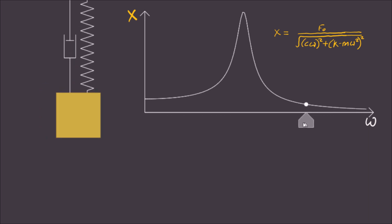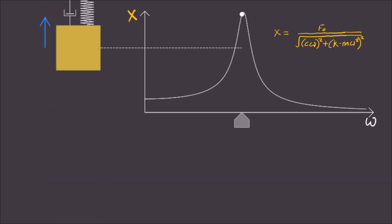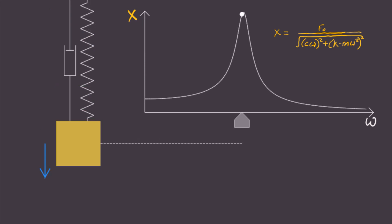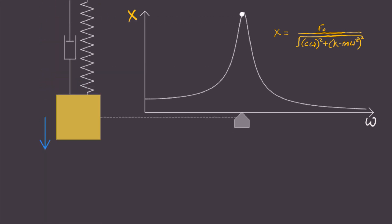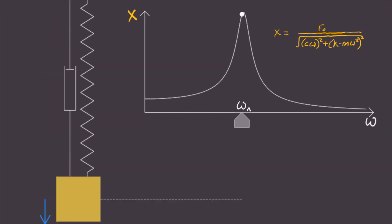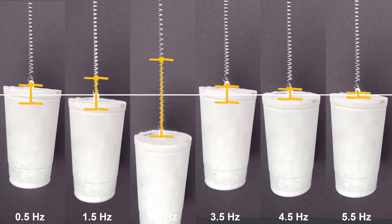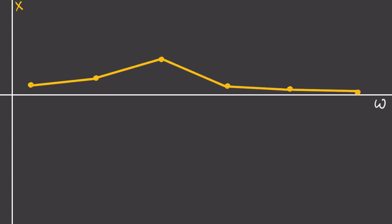But if we set the stepper motor to spin at just the right frequency, then we get something called resonance, and the amplitude skyrockets. It turns out that this phenomenon occurs when the excitation frequency approximately equals the natural frequency, omega n. So let's see if this checks out with experiments. If we track maximum displacements and connect the dots like this, then we notice it does actually look similar to the steady state amplitude formula we showed earlier.